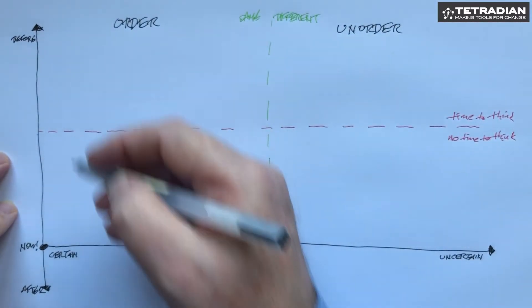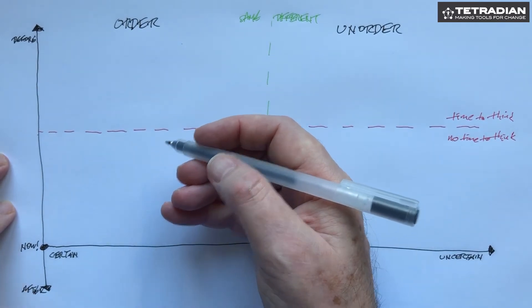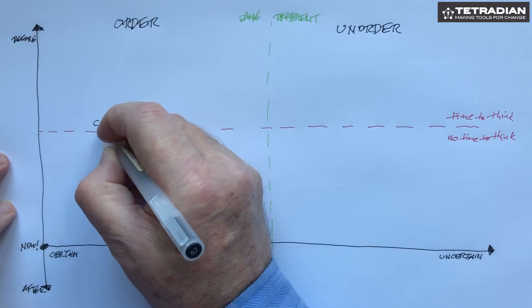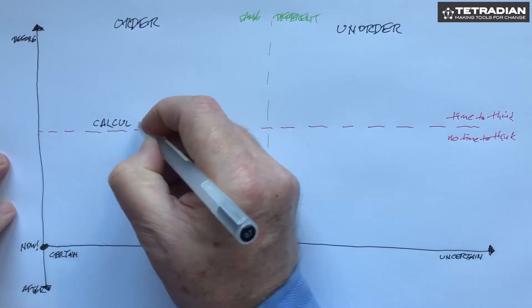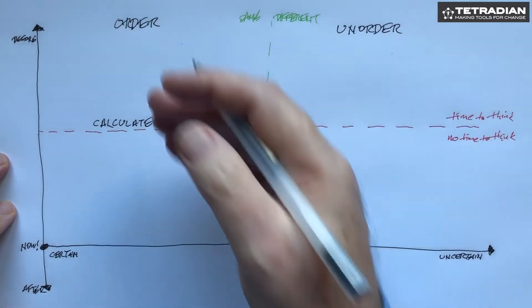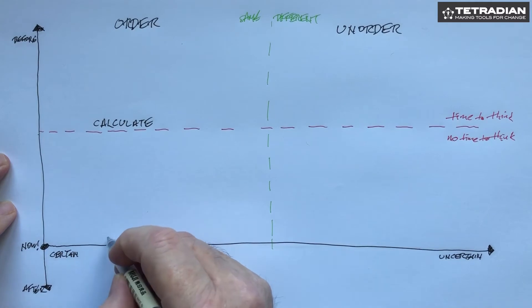So in this kind of area when we've got plenty of time to think or remain and we're looking for certainty, for order, we can calculate what's going on. It's often complicated but we can make it calculated. By the time we have no time left to think, we need things to be simple.